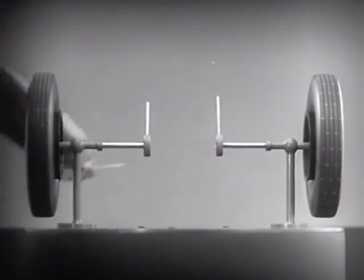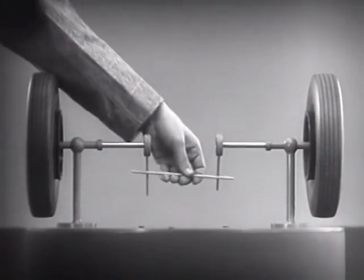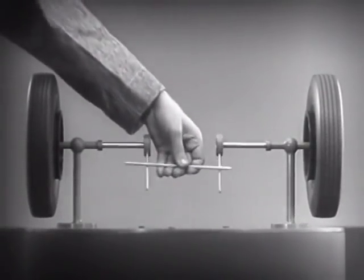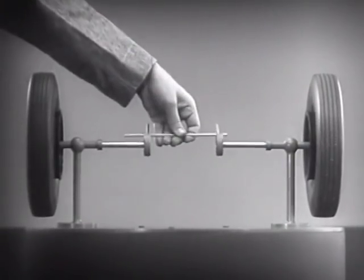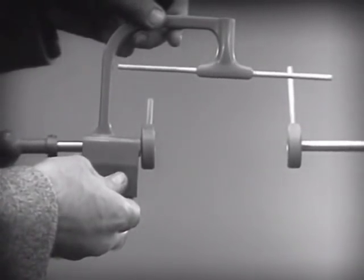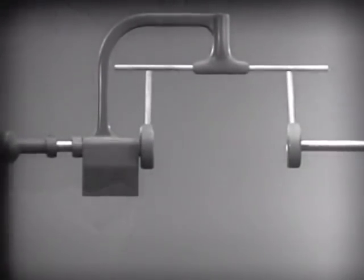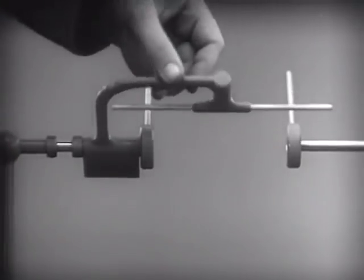With a bar or crosspiece, we can turn both wheels in the same direction at the same rate of speed. Let's get something to hold this bar in place so that it will press against the spokes. Notice that this support is not locked to the axle. It turns freely.